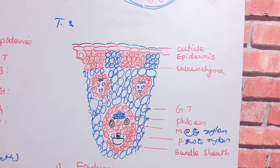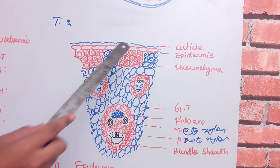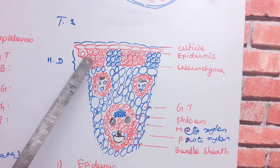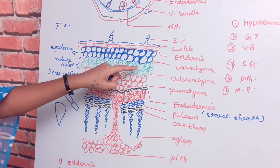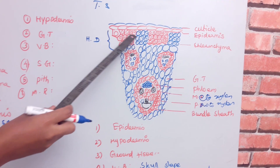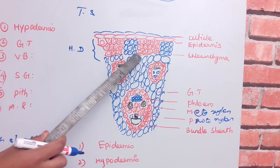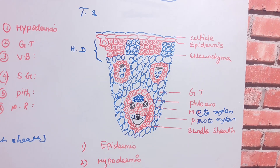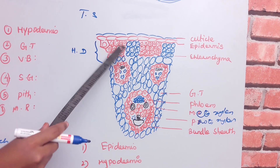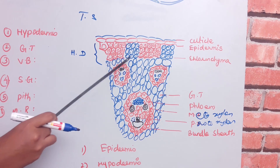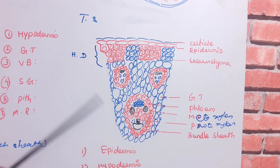Comparatively, the monocot has fewer stomata in the outermost layer than the dicot. The hypodermis is made up of sclerenchyma cells. In between the sclerenchyma patches there are chlorenchyma cells. This hypodermis provides mechanical support to the monocot stem.